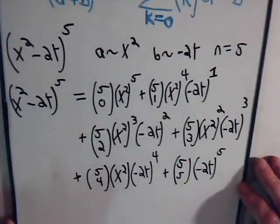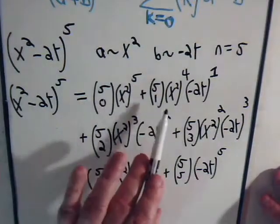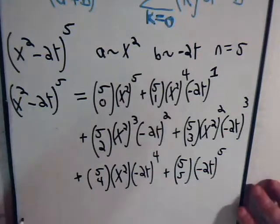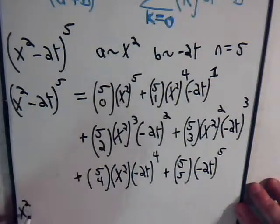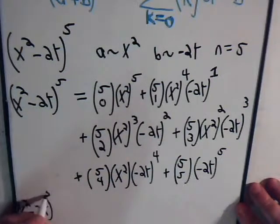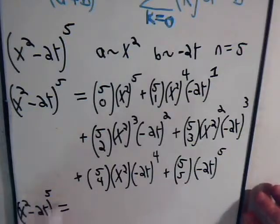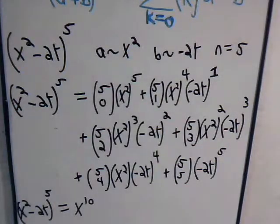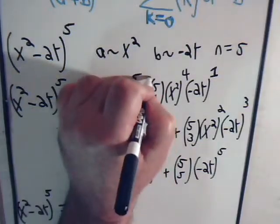So there it is. All we have to do now is determine these binomial coefficients. And of course, in the previous videos, we've handled these quite a bit, so hopefully you're comfortable in doing that. This obviously is just one. So we have x squared minus 2y to the fifth power equals one. That's x to the tenth. Now we have this term. The next one starts off with a binomial coefficient of 5 over 1. And that is just 5.